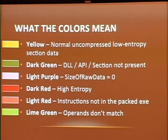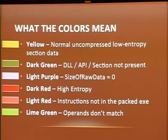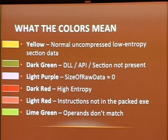The colors are meant to help you with unpacking. Yellow means normal, uncompressed, low entropy data. For the entropy calculation, I'm using Shannon entropy. Dark green means there's a section not present inside of the executable module - either a DLL, API, or something. Light purple means the size of raw data is zero. Dark red means it's high entropy - anything above 7.5 I mark as dark red. Light red means the instructions are not in the original packed executable. Lime green means the operands don't match.